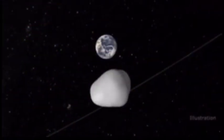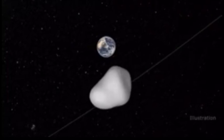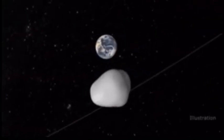...is expected to zip past the planet in the wee morning hours of Sunday, the 7th of October. According to NASA's calculations, the asteroid will reach its closest distance to Earth at about 2:24 AM UK time.